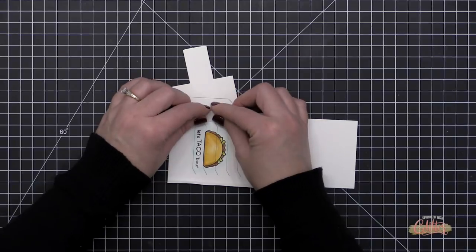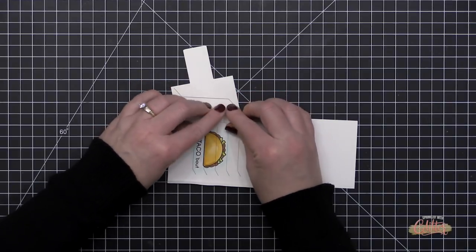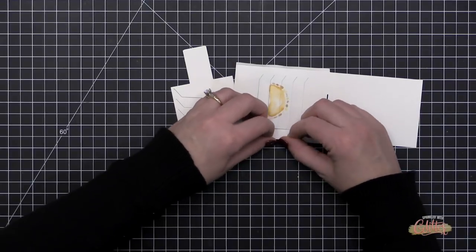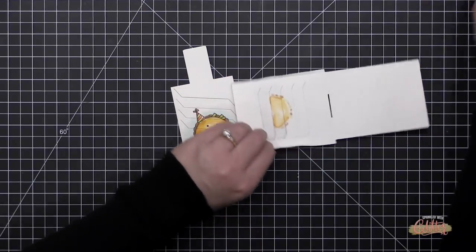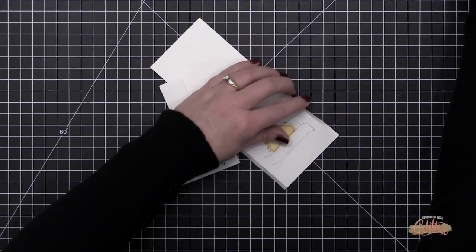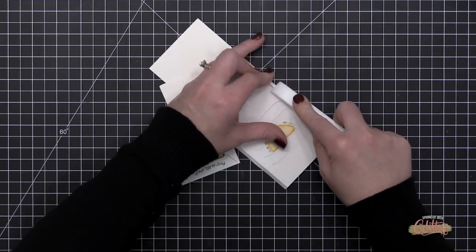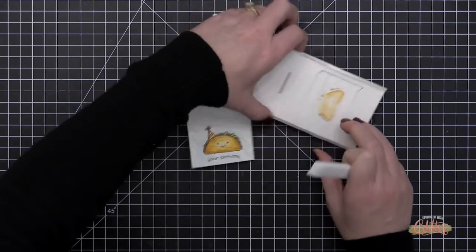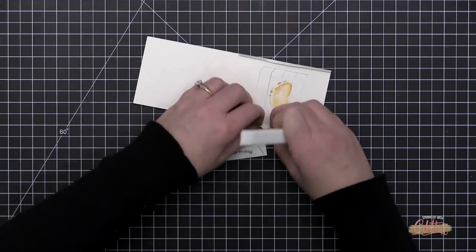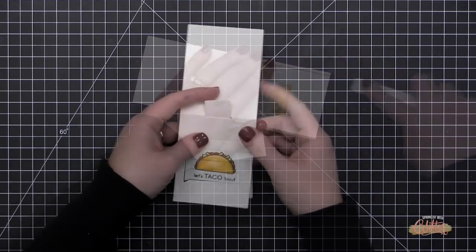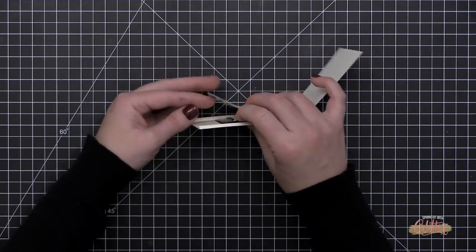This Magic Picture Changer die does create the score lines for you, and you have to score these two little tabs that are along the outer pocket portion of this magic slider piece. So what I'm doing is I'm just getting the score line started with my fingers and then I'm going to reinforce it with my bone folder and fold those tabs in. Before I add any adhesive or anything, I am going to slide my inner portion in.